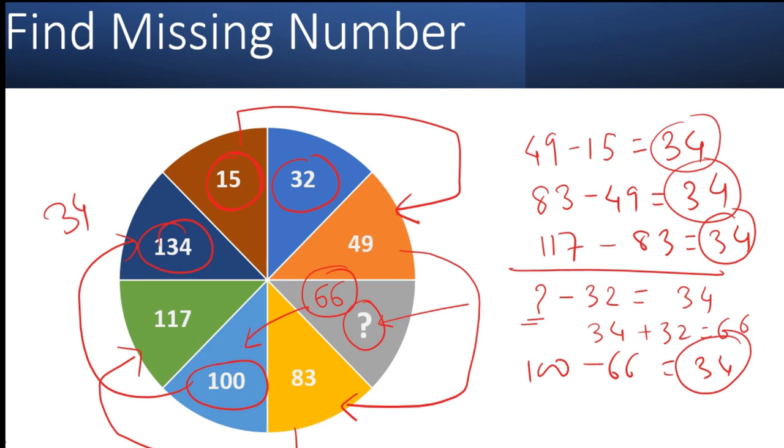So the difference between one alternate step is 34 in the clockwise direction. I hope you enjoyed this puzzle. Subscribe for more.